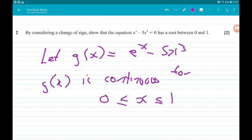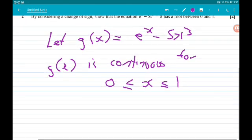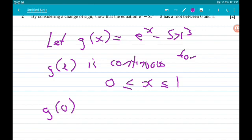Let's see what the value of the function is at 0 and 1. So g(0) equals e^0, which is 1, minus 5 times 0^3, which is 0. So g(0) = 1.